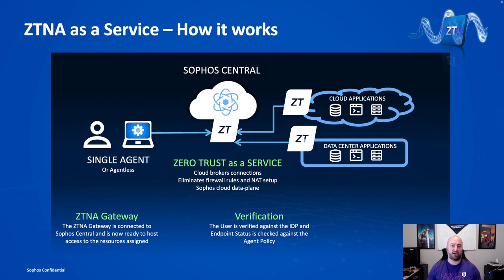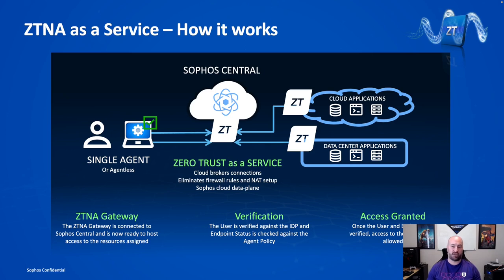The next step is verifying the end user against the identity provider, and also verifying the status of that device — making sure it's in a good green state before granting access to the applications or shares inside of the ZTNA gateway. With ZTNA as a service, all of this goes through a cloud broker in Sophos Central. There is no need on the endpoint side or the ZTNA gateway side to set up anything on the firewall — no inbound rules needed. Everything connects back to the cloud broker in Sophos Central, and the endpoint transfers information through Sophos Central.